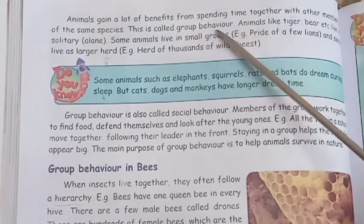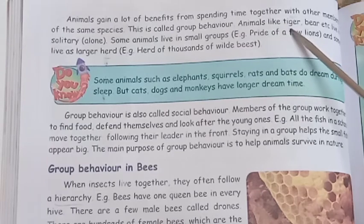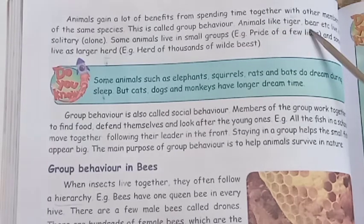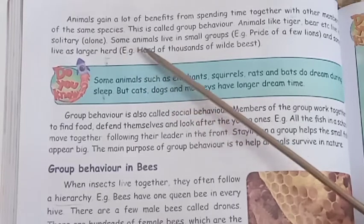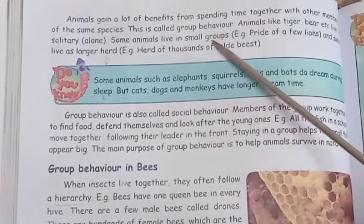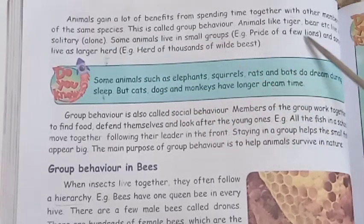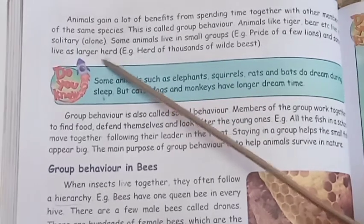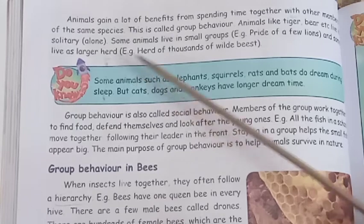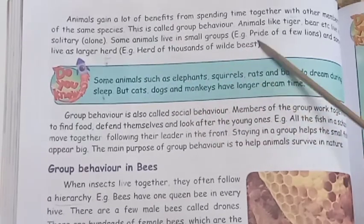Group behavior: Animals like tigers, bears, and similar animals live in solitary. Some animals live in small groups, such as a pride of a few lions. And some live in larger herds, such as a herd of thousands of wildebeest in Africa.